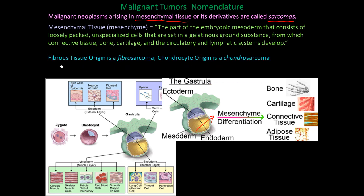A malignant tumor of fibrous tissue origin is called a fibrosarcoma. A malignant tumor originating from chondrocytes or cartilage cells is called a chondrosarcoma. If a malignant tumor originates from bone, it is called an osteosarcoma.